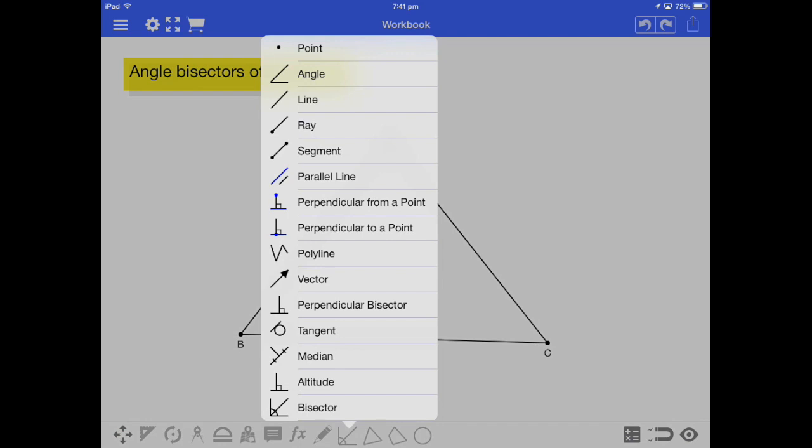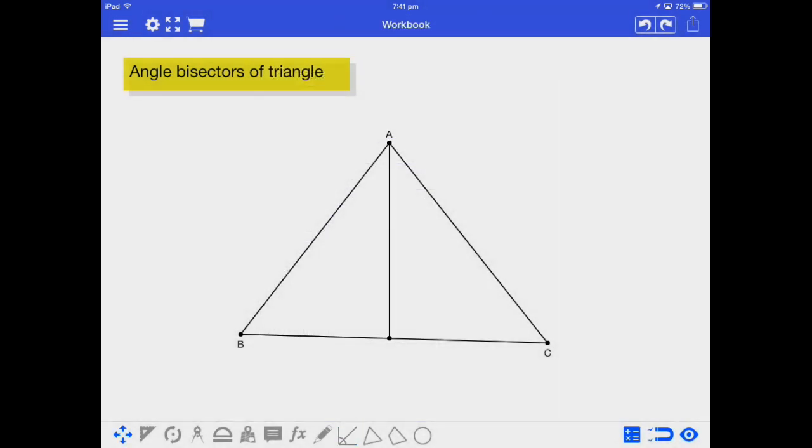Next, we draw an angle bisector at angle A. Now we can see that this line bisects angle A into two equal halves.